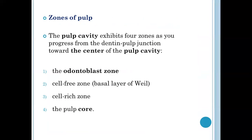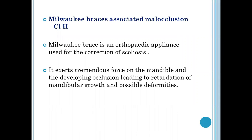The next question was about the zones of pulp. The pulp cavity exhibits four zones as we progress from the dentin-pulp junction towards the center of the pulp cavity. The odontoblastic zone is the outermost zone, followed by the cell-free zone, also called the zone of Weil. Then comes the cell-rich zone, and the innermost is the pulp core.